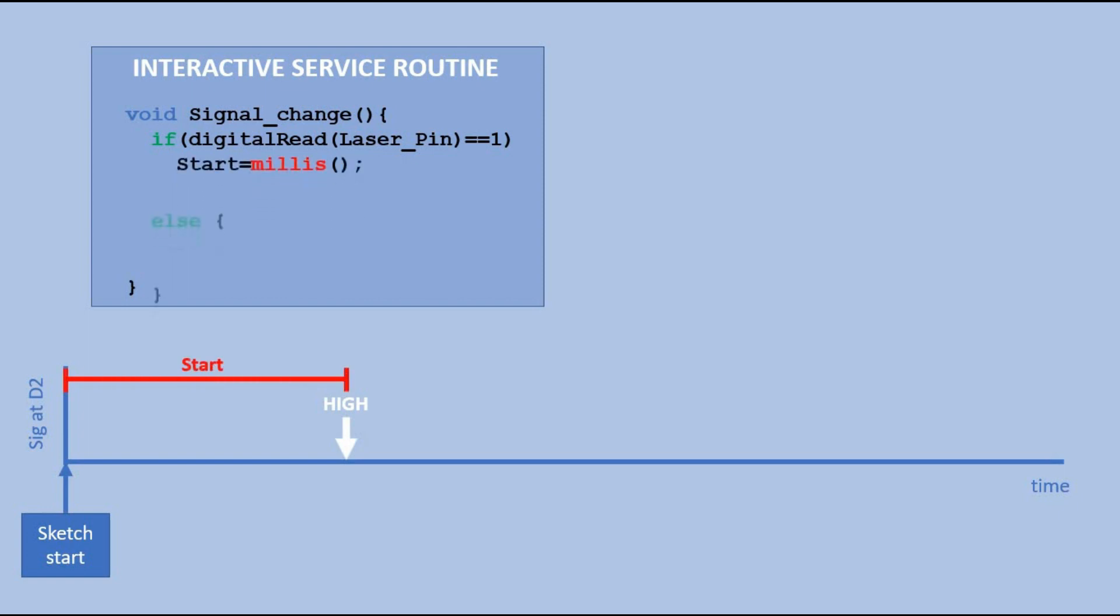And in this case, we capture the timestamp with millis and save it to start variable. Execution of ISR is finished and we return to the loop function code to where we left off. When the laser signal finishes, another change at laser pin is detected. ISR kicks in again. This time the change is from high to low, so we execute else part of the if statement. This time we also run millis to capture the timestamp, but this time we save it to end variable. Now that we have start time and end time of the signal, we can calculate its duration and save it to signal len variable. Simple.